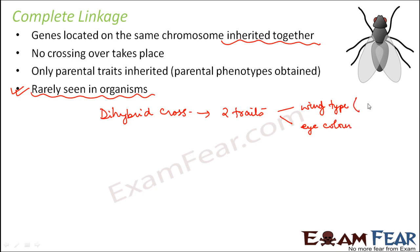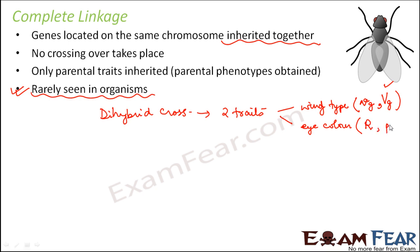Wing can be normal or vestigial. Vestigial is denoted by small vg and normal wing is denoted by capital VG. So if it is vestigial it is small vg; if it is normal it is capital VG. Normal is dominant over vestigial.